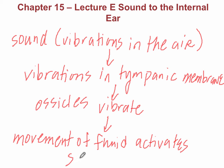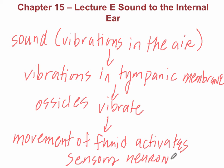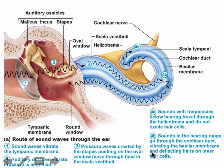So once this fluid is activated, it's going to activate the sensory receptors or the sensory neurons. So this is going to be the site of the transduction, just like we've learned about in some of the other previous special senses as well. So this slide is showing you a little more detail for the cochlea. We see the route of the sound waves that go through the ear.